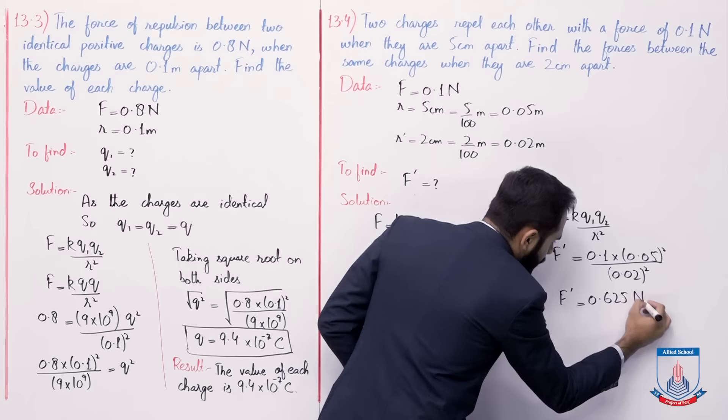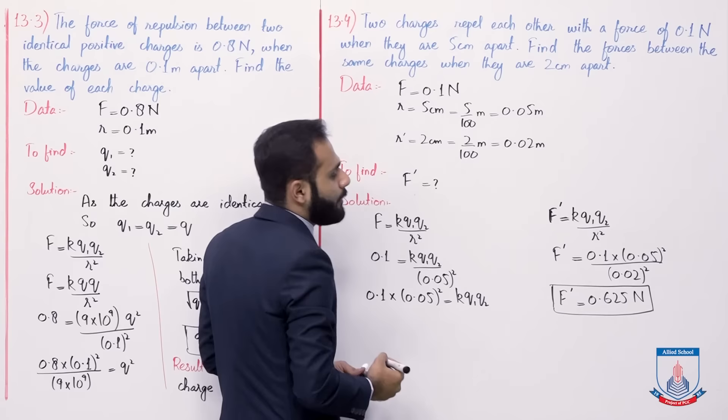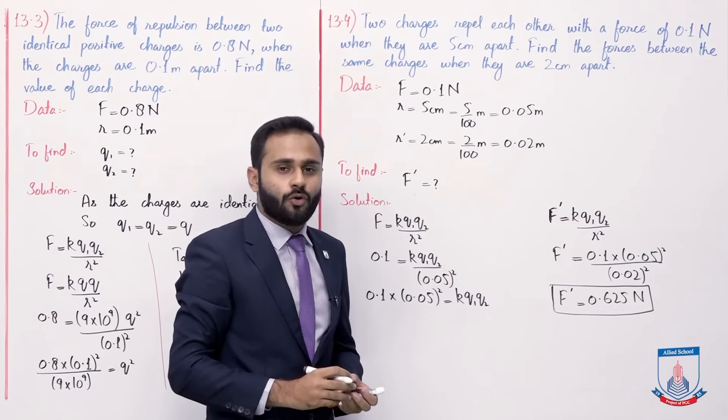Ab isko further jab solve karenge toh answer aajayega 0.625 newton. So jab charges ke darmiyaan distance 2 cm apart hoga toh unke darmiyaan force kitni hogi, that is 0.625 newton. So now write the result.